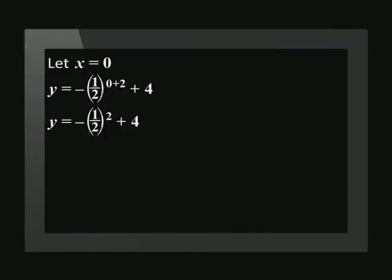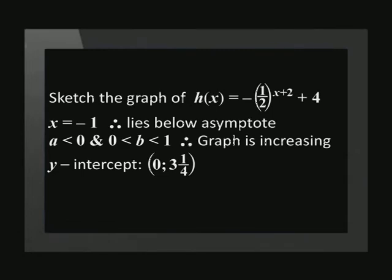The next step is to find the y-intercept. To do this, we make x equal to 0. This gives us y equals negative open bracket one-half closed bracket to the power of 2 plus 4. Simplifying further, we get y equals negative one-quarter plus 4. The coordinates of the y-intercept are (0, 3¼). Step four is to find the horizontal asymptote. The equation of the horizontal asymptote is y equals 4.